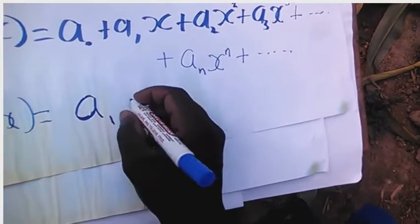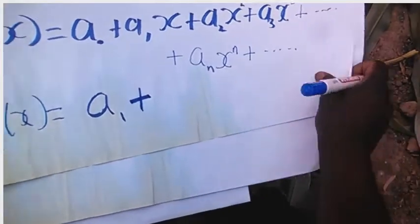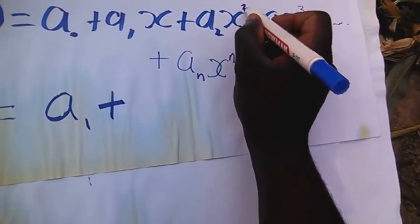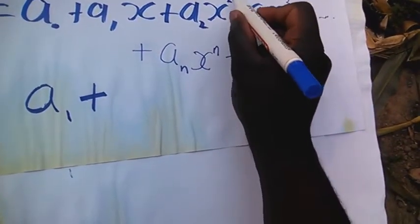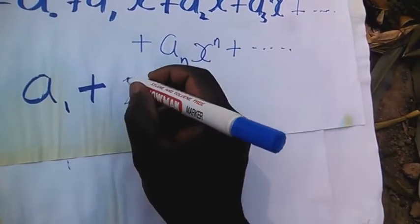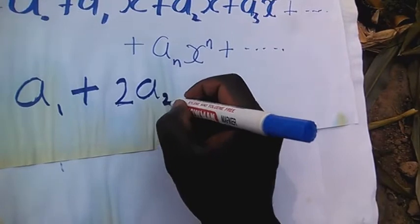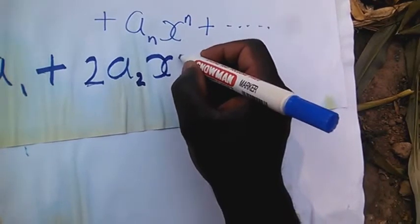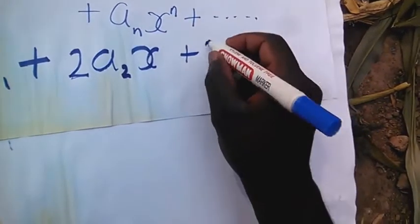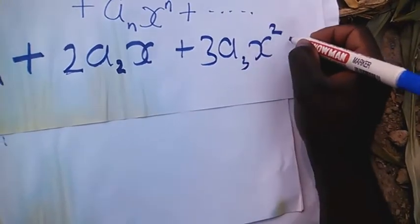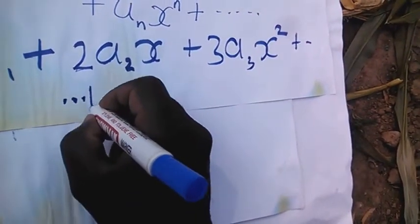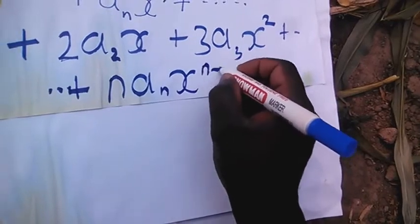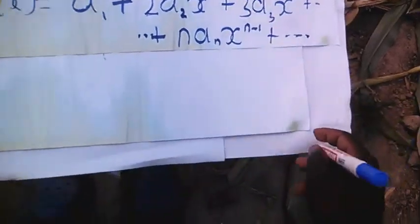So we remain with A1, plus 2A2x to the power 1, plus 3A3x squared, up to the nth term, which will be n times An times x to the power n minus 1, up to infinity.